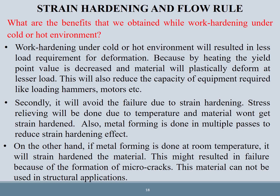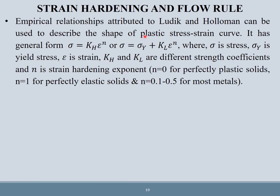Empirical relationships attributed to Ludwik and Hollomon can be used to describe the shape of the plastic stress-strain curve. The general forms are σ = K_H ε^n or σ = σ_y + K_L ε^n, where σ_y is the yield stress, K_H and K_L are strength coefficients, and n is the strain hardening exponent. For n = 0: perfectly plastic solid; n = 1: perfectly elastic solid; n = 0.1 to 0.5 for most metals.